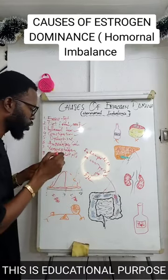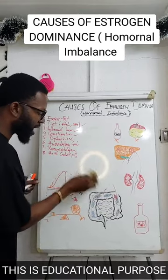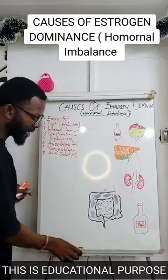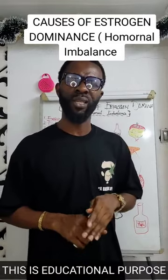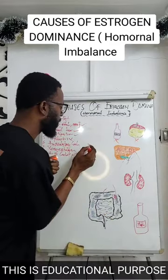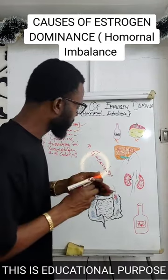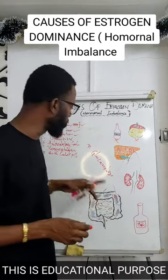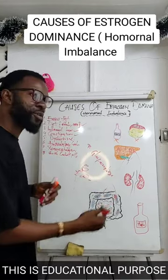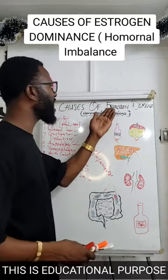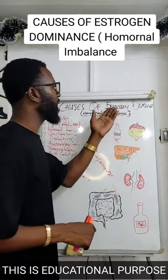The next cause is dysbiosis. In our guts we have bad and good bacteria. When these bad bacteria are dominant, they produce an enzyme called beta-glucuronidase. These bad bacteria in your gut can increase estrogen by producing a lot of it, and that will lead to estrogen dominance.